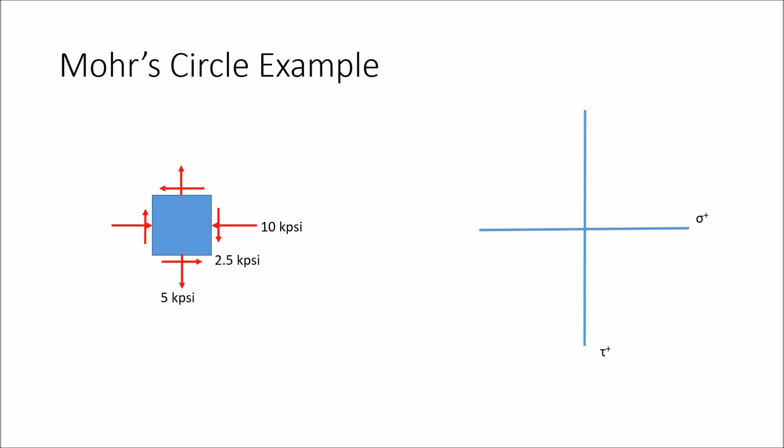Notice the positive and negative orientation for each. The normal stress axis is pretty normal. It is the same as your x would be, but the shear axis is the opposite of what is normally positive, with the positive direction being down instead of up.